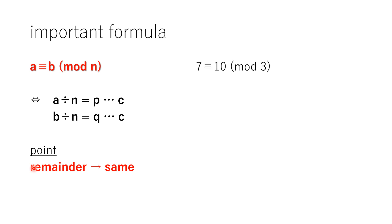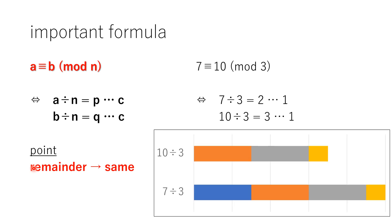This is an example: 7 is congruent to 10 modulo 3. This means 7 divided by 3 is 2 remainder 1, and 10 divided by 3 is 3 remainder 1. The remainders are the same. Look at this picture — you can understand that the yellow parts are the remainders.